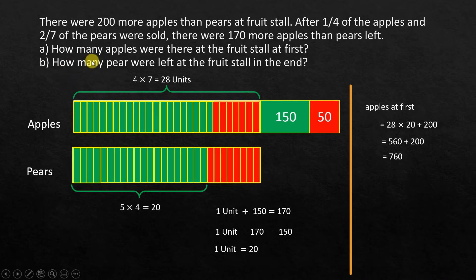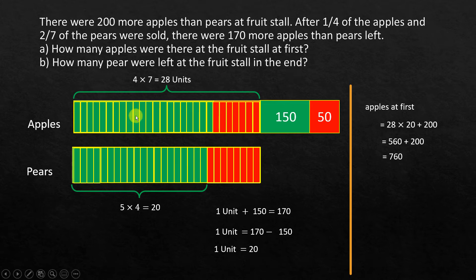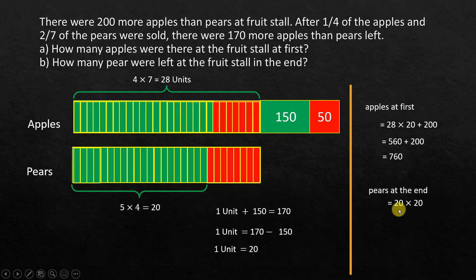For the second question — how many pears were left at the fruit stall in the end? At the end, two-sevenths of pears were sold, so we are left with 20 units of pears. Pears at the end equals 20 units times 20, because each unit represents 20 pears. So that is equal to 400. And that's how we solve this problem using the model method.